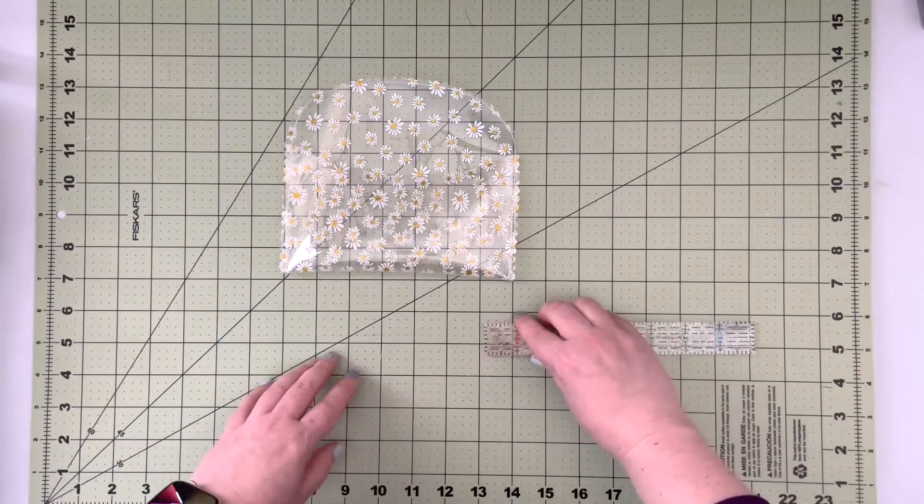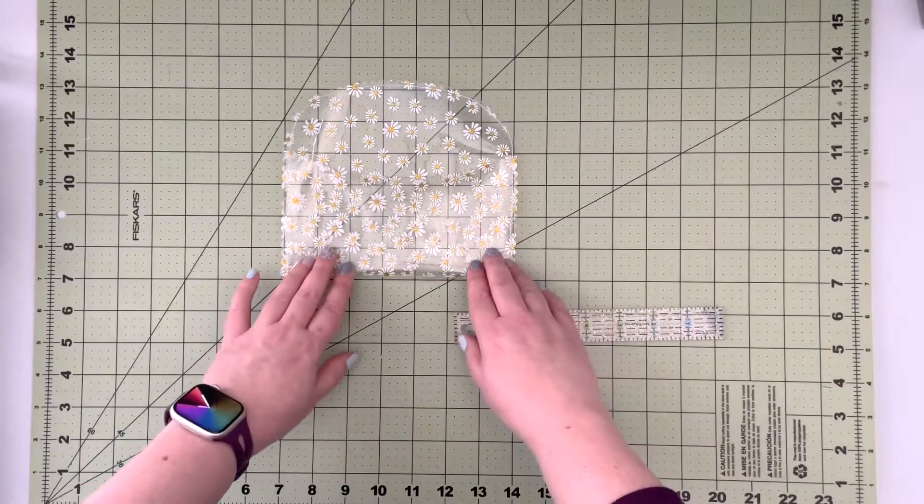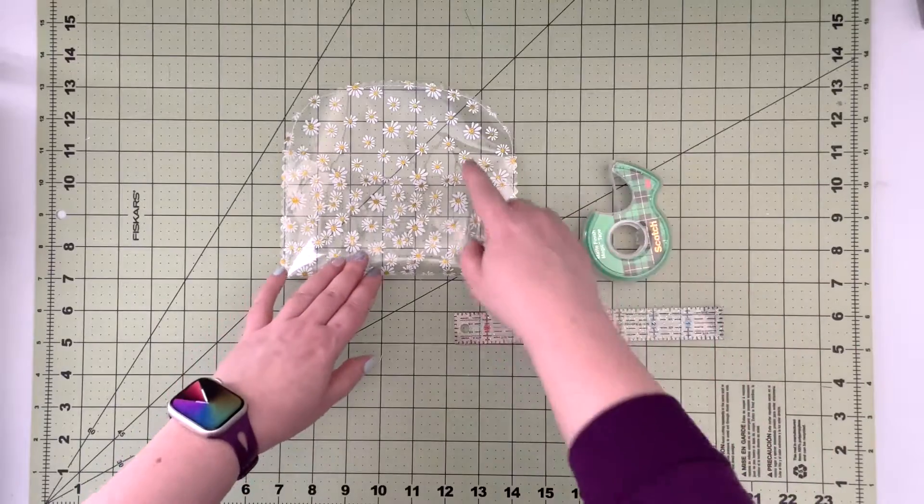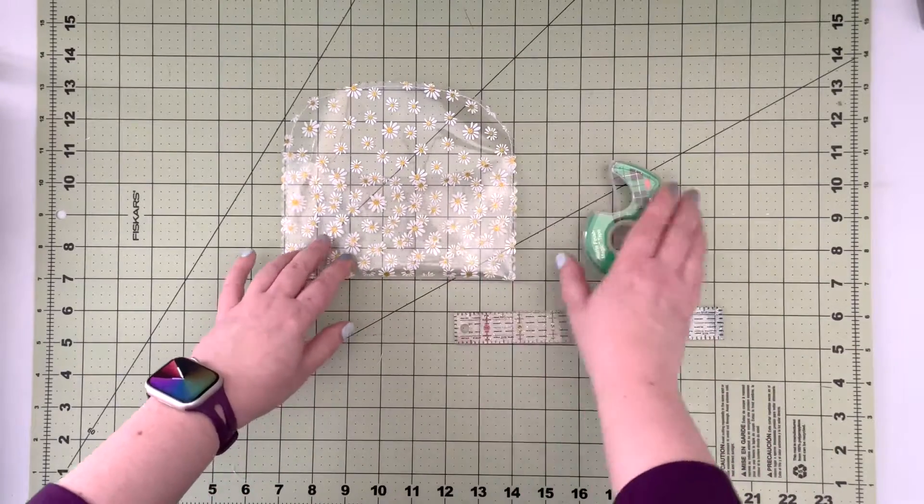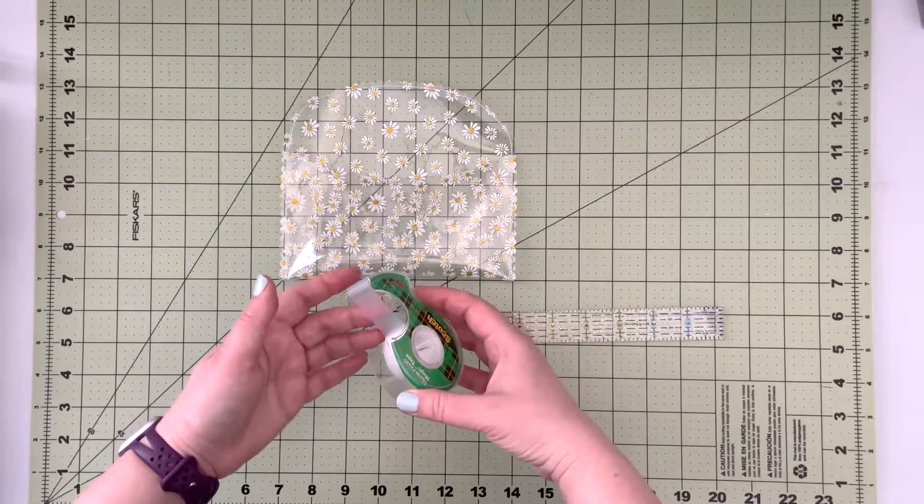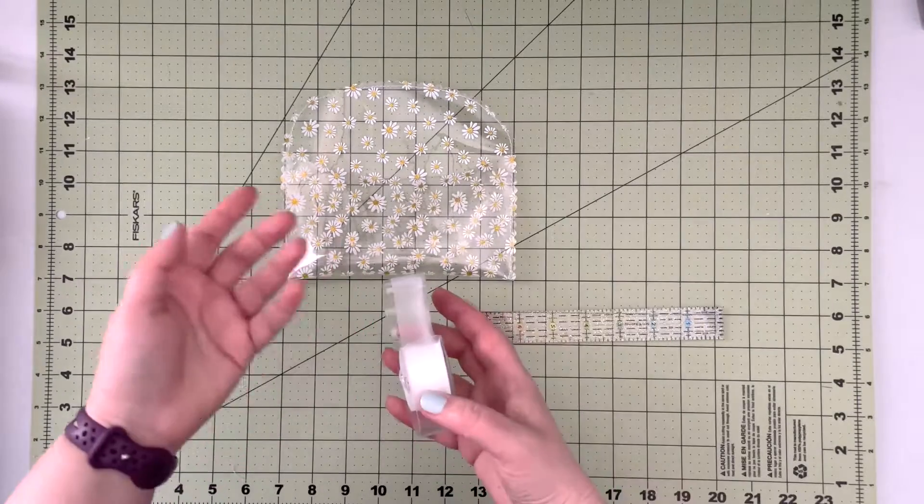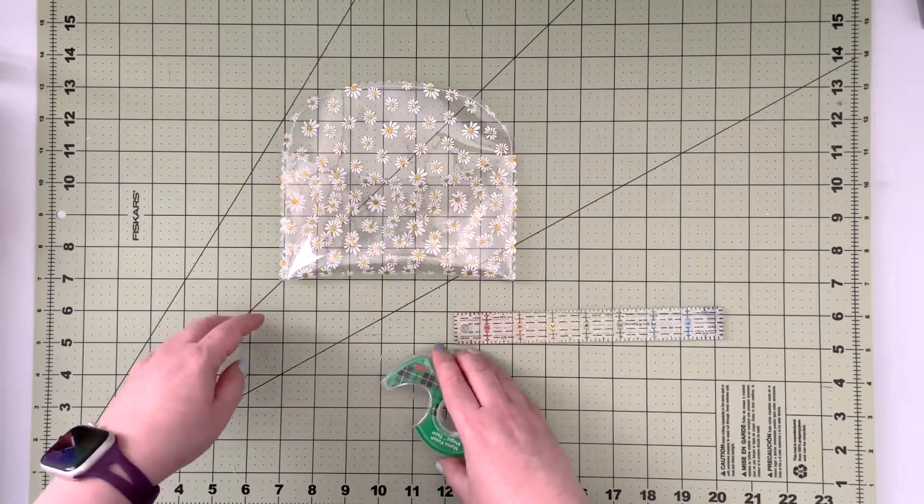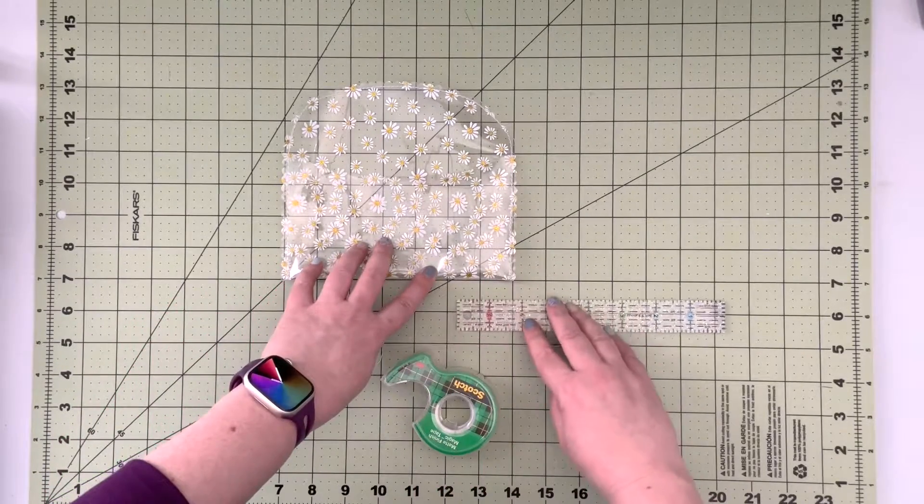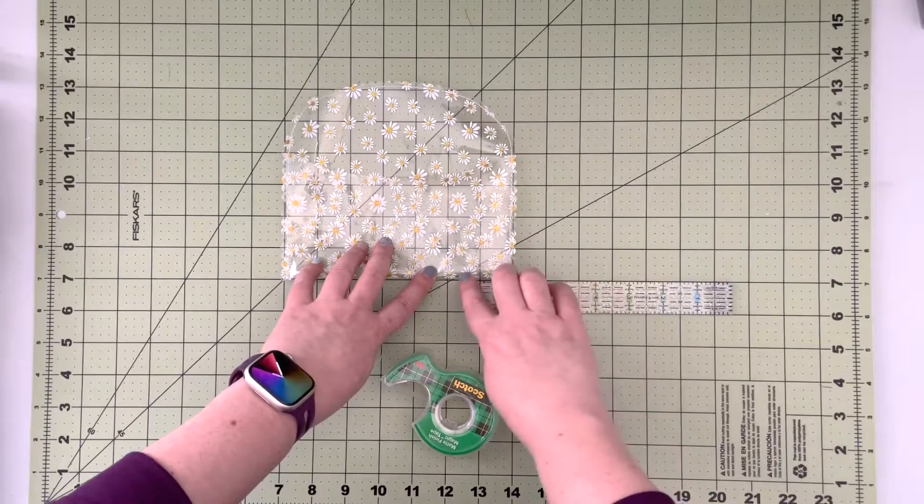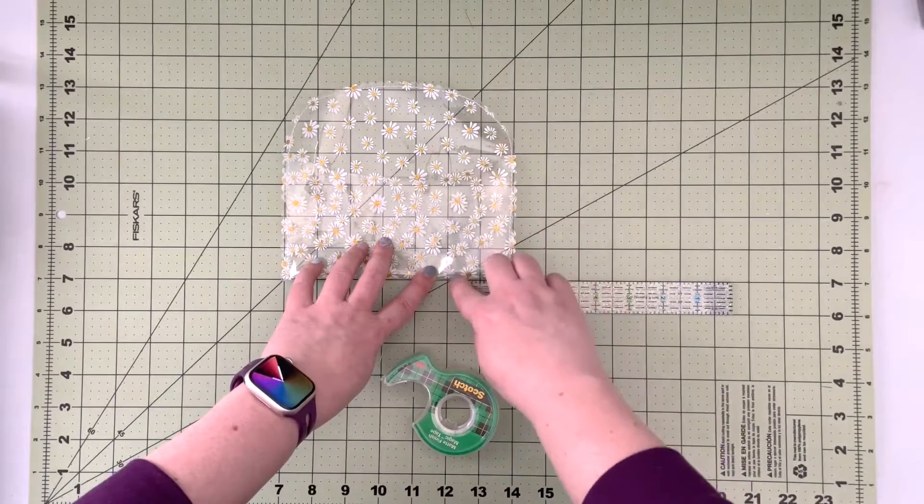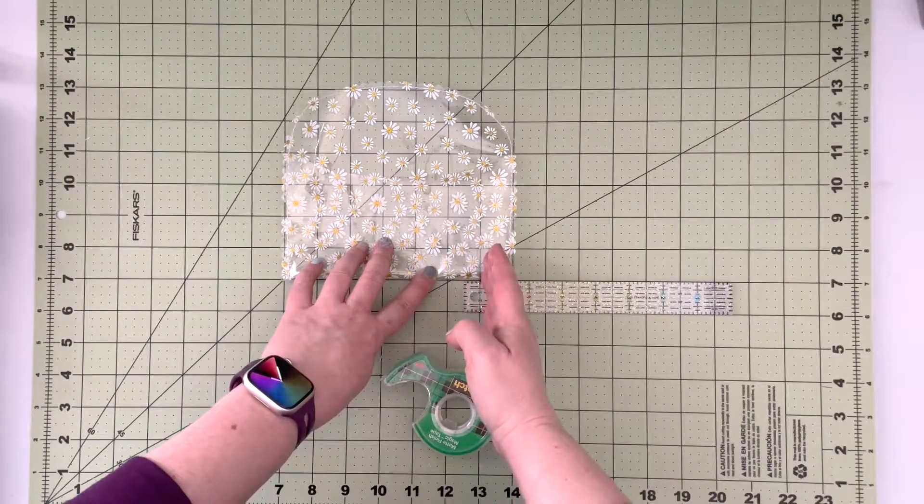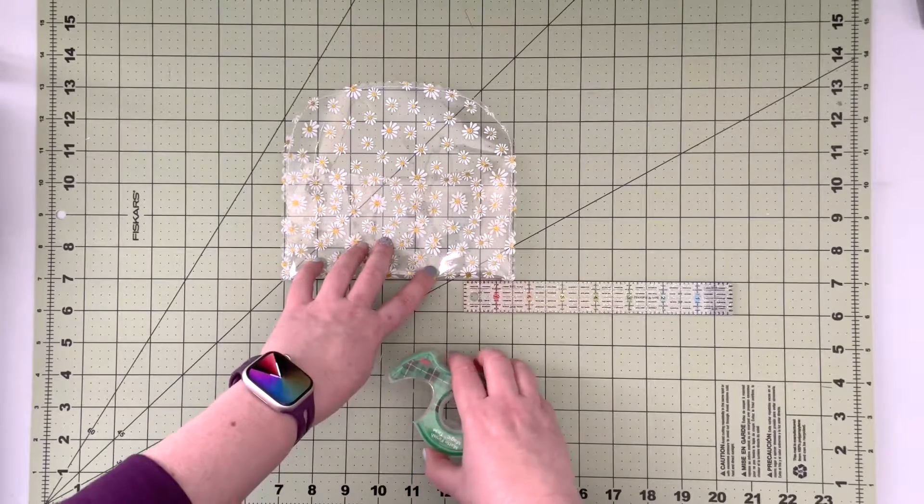And to do that I'm gonna use the ruler or I can refer to the measurement on my cutting board. But because I can't really draw a line on my clear vinyl I'm just gonna use regular scotch tape to mark my seam lines. You can use washi tape, that's probably a better choice because it's less sticky. So I'm gonna measure inch and a half from each side and place a piece of tape so I know I'm gonna be sewing on the outside edge of the tape.